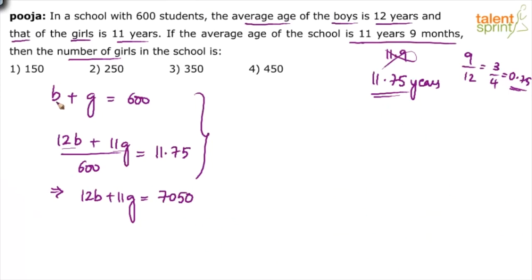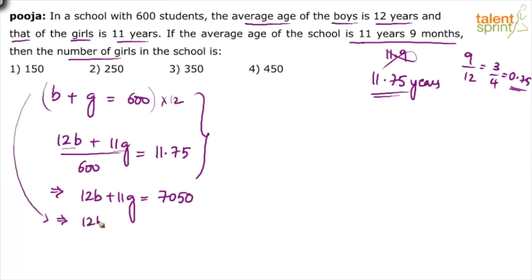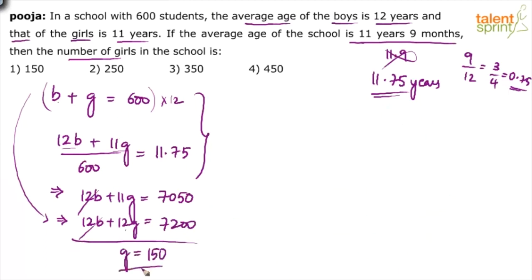The second equation is B + G = 600. We want to find the number of girls, so we need to eliminate B. The coefficient of B in the first equation is 12, so multiply the second equation by 12: 12B + 12G = 7200. Now subtract the first equation: 12B cancels, and 12G − 11G = G. So G = 7200 − 7050 = 150. There are 150 girls in the school.